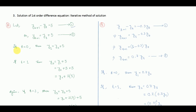Now if t equals 0, then equation number 2 becomes y1 equals y0 plus 5. That means if we put the value of t equal to 0, this equation becomes y1 equals y0 plus 5.